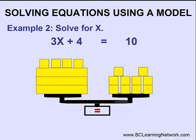We must do the same thing to both sides to keep it balanced. Our objective is to isolate x. So we'll remove four of the square boxes from both sides, leaving us with three x's equal to six square boxes.